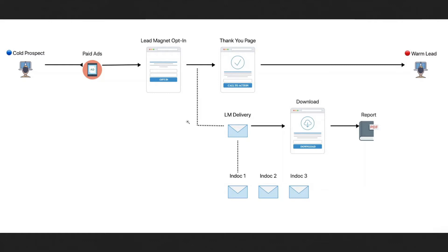What you see on my screen is the classic scheme of a marketing funnel. It starts from a cold prospect — from maybe paid ads or even your blog — and you take your prospect to an opt-in form where you give a lead magnet. They insert their name and email, you build your mailing list, they reach a thank you page, and a follow-up via email begins.